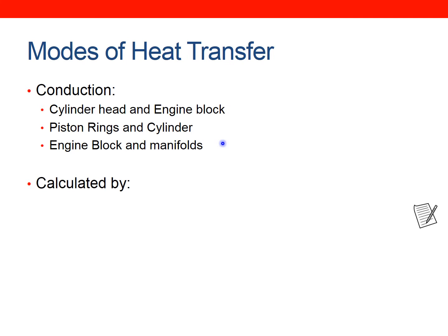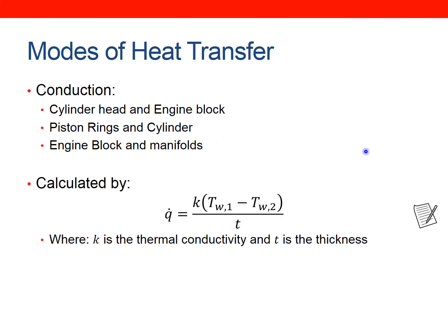The generic equation for conduction — take note of this for the tutorial — is that the heat flux (in watts per metre squared, i.e. heat per time per area) is equal to the thermal conductivity of the material times the temperature difference. That's the temperature of the wall on side one minus the temperature of the wall on side two, all divided by the thickness of the material. This assumes side one is hot and side two is the cooler side; a negative heat flux simply tells you the heat is flowing the other way.